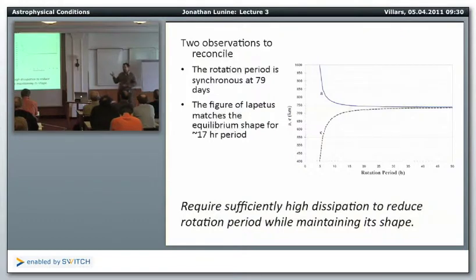Now how would it slow from 17 hours to 79 days? Well the simplest way to do this is by tidal dissipation. The fact that Saturn exerts a gravitational force on Iapetus that's not the same on the near side as it is on the far side. If the interior is dissipative enough, then one can essentially break the rapid rotation of the satellite through this tidal force. And that is a possibility, but it requires that the satellite have a sufficiently high dissipation in its interior for those tidal forces to manifest themselves as dissipative forces.